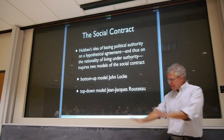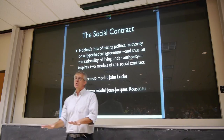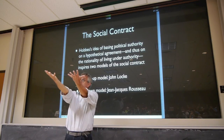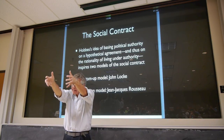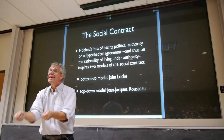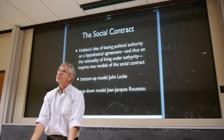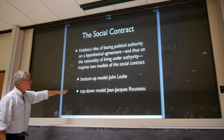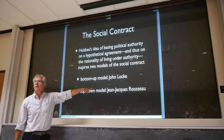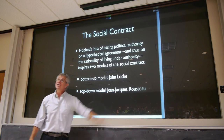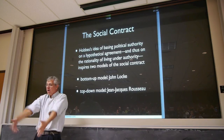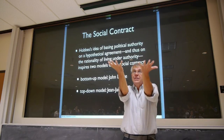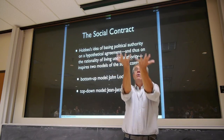The idea is that it's individual people who have rights, who have interests, and they give some of those up to the government. So the government gets whatever authority it has from the people, from the consent of the governed — authority flows from the people up to the government. The other conception is a top-down model in Jean-Jacques Rousseau: in the end, there really are no rights until people form a government, and then the government grants people rights. Rights and authority flow from the top down.